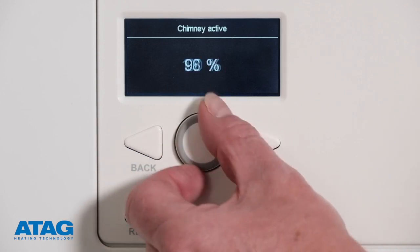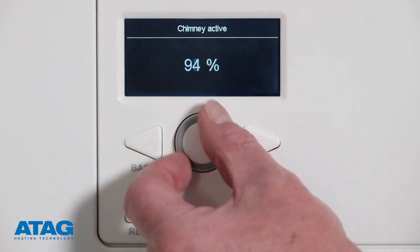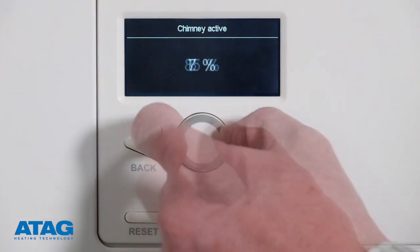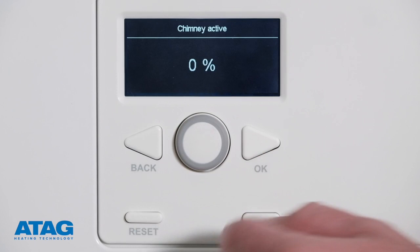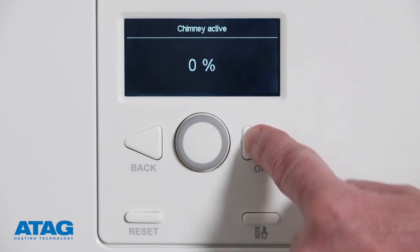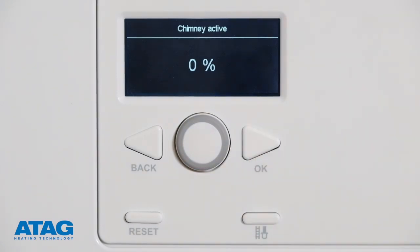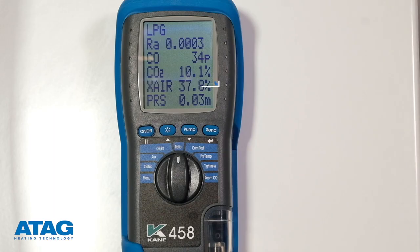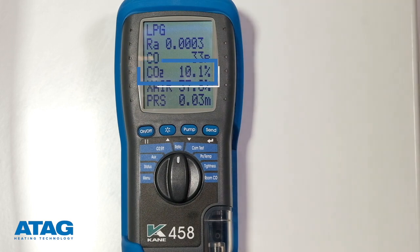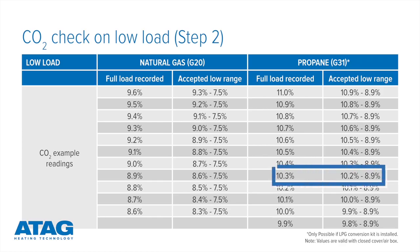Step two is checking the low load of the boiler. To do this, turn the selector wheel and move the percentage down to zero percent and then press OK. This is now in low load. Remember, the CO2 value at low load must be lower than the CO2 value at full load. Check whether the CO2 values are within the correct range using this table.